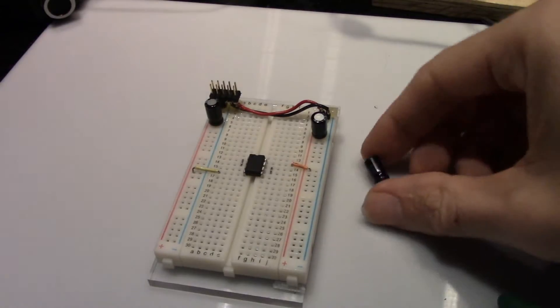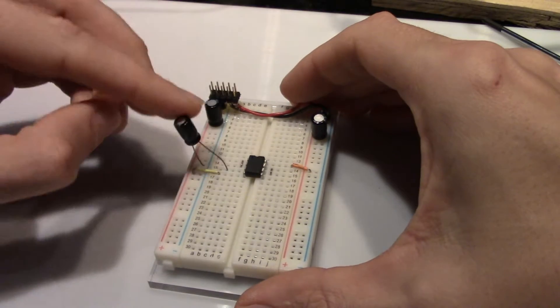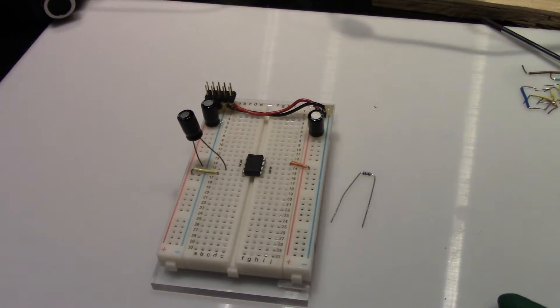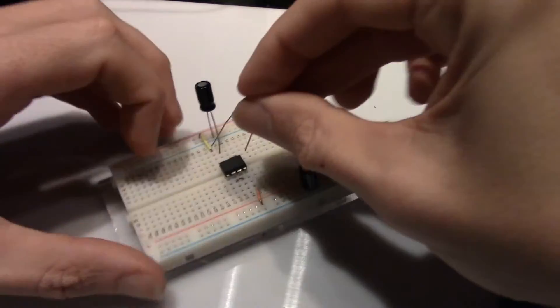Then place the 100 microfarad capacitor from pin 3 to ground. The final part is a 100 ohm resistor from pin 3 to an open bus.